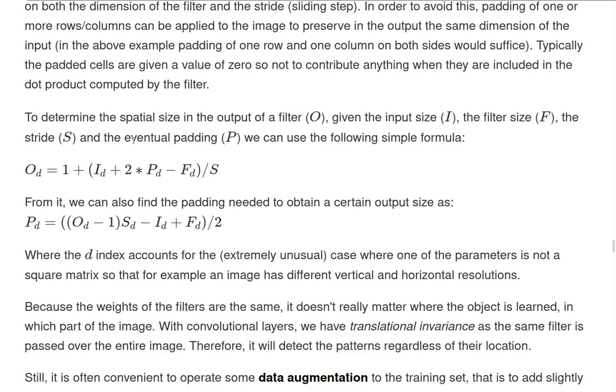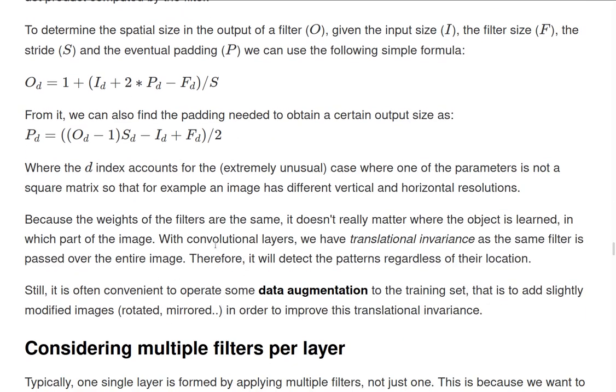And from this formula, you can also find, if you want to keep the dimension, the number of padding that you need to put to keep the size of the matrix constant. And as we said, because the weights of the filter are the same across the matrix, it doesn't really matter where the object is learned, where it is in the matrix - it will still be learned. And this property has a name, and it's translational invariance.